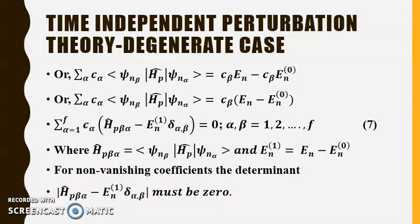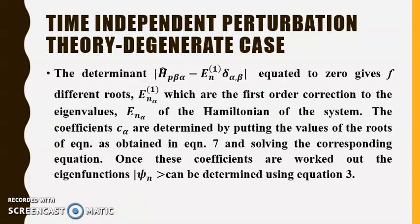For a non-trivial solution, the determinant of the coefficients must be zero: det|H'_{βα} - E_n^1 δ_{αβ}| = 0. This secular determinant, when equated to zero, gives f different roots E_n^1(α), which are the first order corrections to the eigenvalues E_n^α of the Hamiltonian of the system.